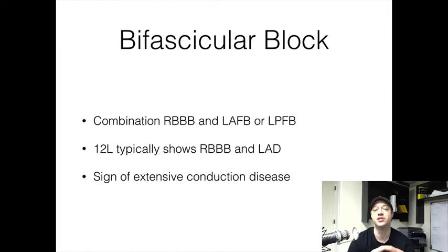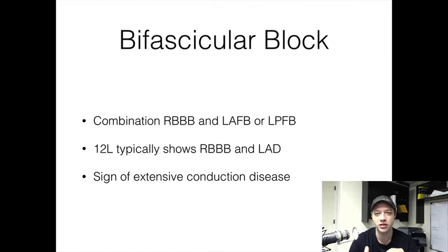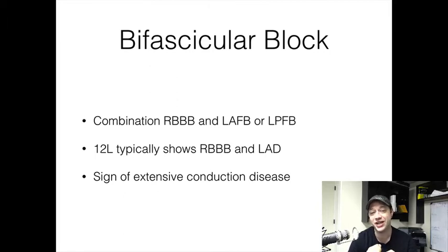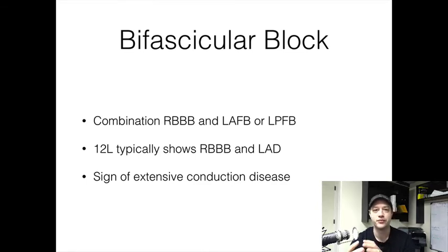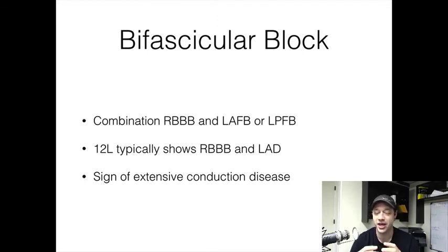A bifascicular block is a rhythm on a tracing that you may have seen before but may not have recognized. It's probably a little bit more common than we are aware of. A bifascicular block is a combination of a right bundle branch block and a left anterior fascicular block or a left posterior fascicular block. This is important because we have one conduction delay where the heart's turned the wrong way and another conduction delay at a different level where we're not getting enough electricity through the heart. Your 12-lead is typically going to show a right bundle branch block and a left axis deviation.